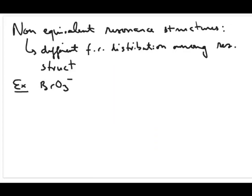The other type of resonance structure is called non-equivalent resonance structures. The reason they're called non-equivalent is that when you calculate the formal charge distribution among all atoms, you'll find that each resonance structure has a different formal charge distribution compared to the others. The example we're going to use is BrO3 minus, the bromate ion, which we also used in the prior video to discuss how to calculate formal charges. I'm going to draw a few different resonance structures for BrO3 minus and calculate the formal charge for each.